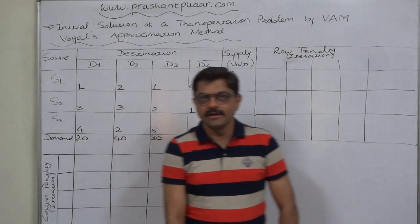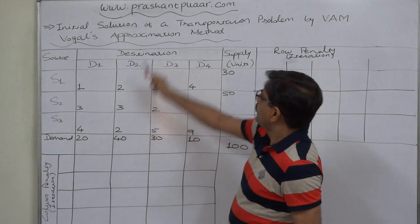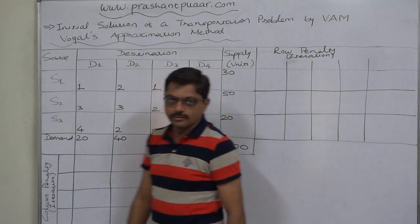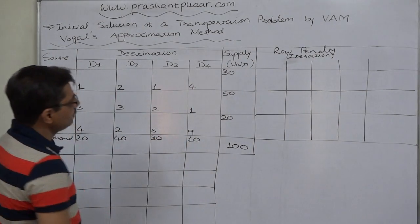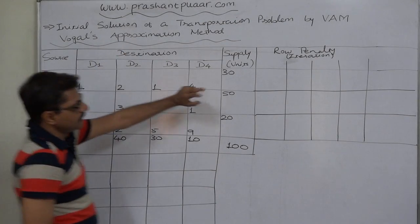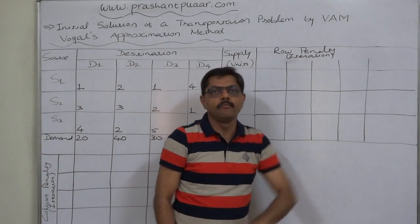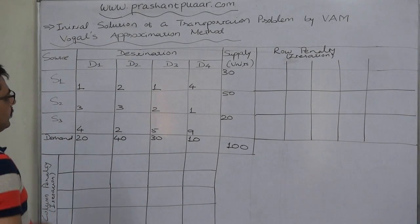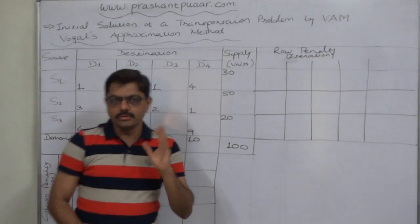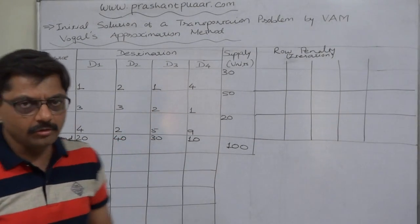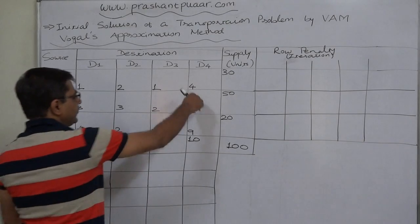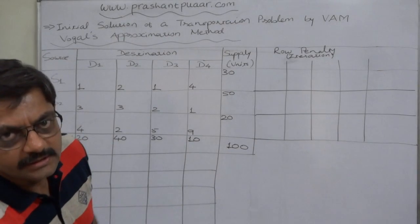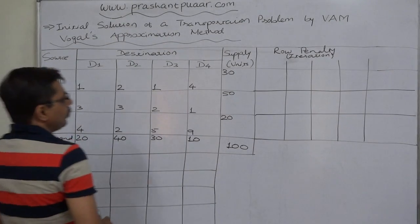Hello friends. In this lecture we are going to learn the most important, most effective, and most efficient method of getting the initial solution of a transportation problem — that is Vogel's Approximation Method, popularly known as VAM. In VAM, we make allocation not on the basis of geographical location or directly selecting the cell with the least cost, but on the basis of penalty or opportunity cost.